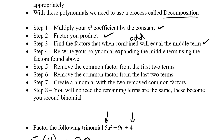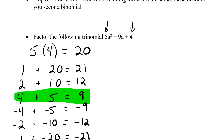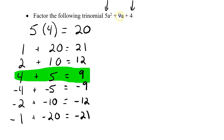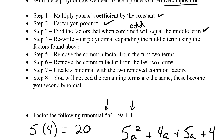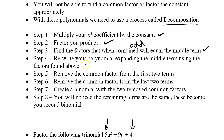Step four: rewrite the polynomial, expanding the middle term using the factors found above. Our middle term was 9a, and we're replacing it with 4a and 5a. So we get 5a squared plus 4a plus 5a plus 4. We've expanded the polynomial. Step four is done.